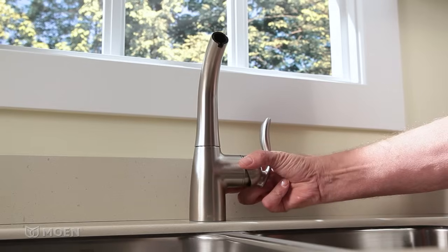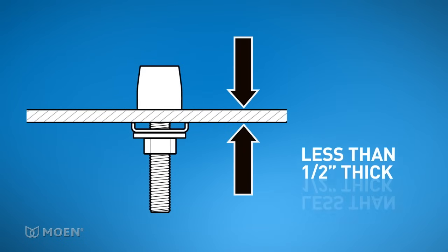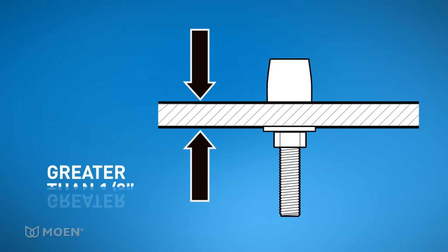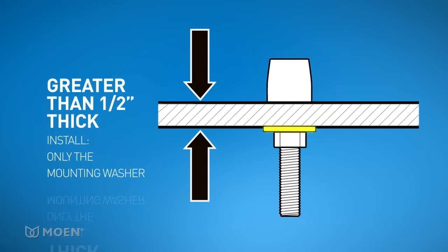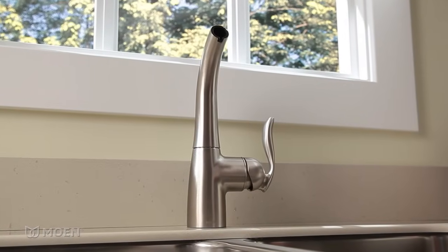Make sure the handle is on your right and the spout is facing you. If your countertop or sink is less than a half inch thick, install the support bracket and mounting washer for added stability. If it's greater than a half inch, only install the mounting washer. In this video, we're demonstrating a thin installation.